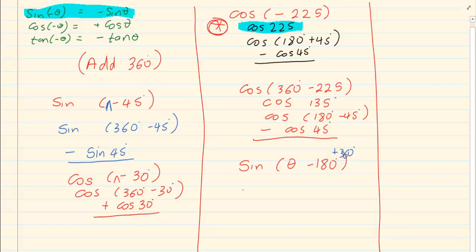And what would that give us? Sin minus 180 plus 360 gives me 180. And then my angle is positive. So it's plus theta. Reduce gives me negative sin theta.